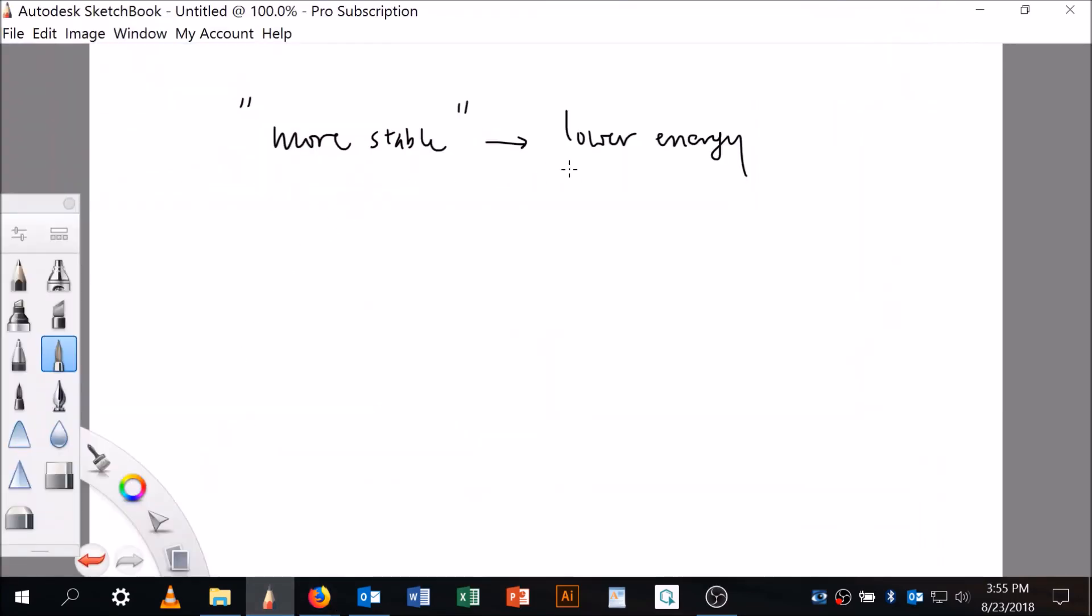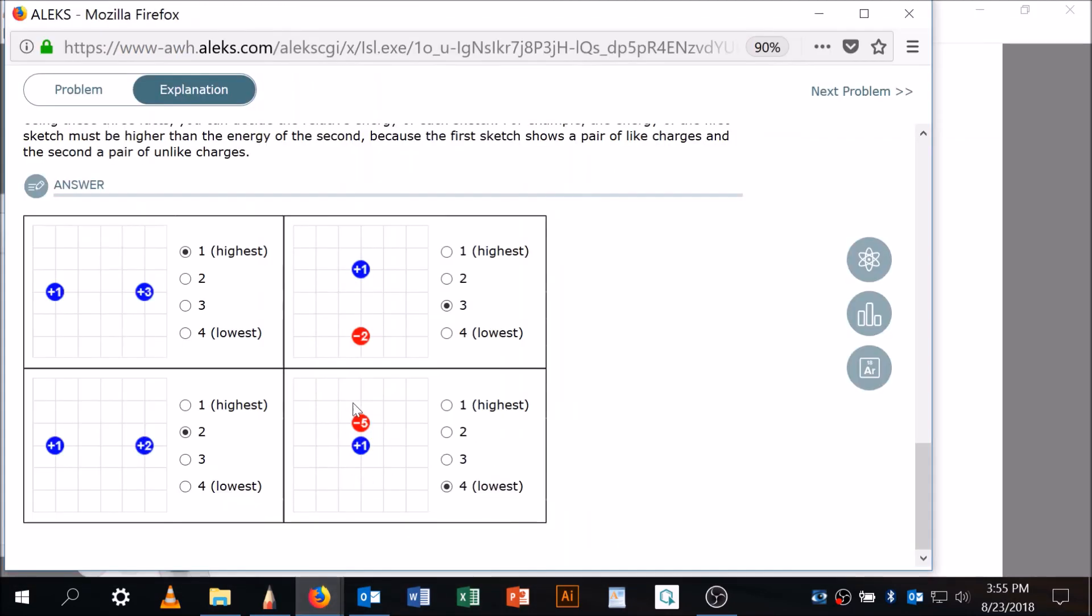So, this is the most stable. Going back here. More stable means lower energy. So, this is the most stable, and as you would expect, they like each other, they want to be close, and they are. So, that's the lowest. These are attracted to each other also because they're opposite charges, but they're not as close as these guys, and the charges aren't as big. So, it's going to be the next lowest. And then, here's the worst of all of them.